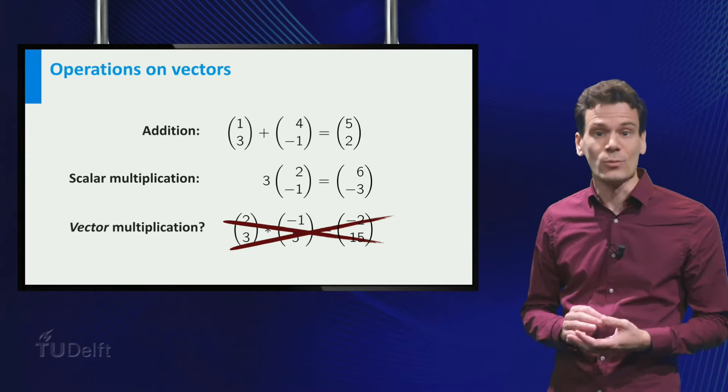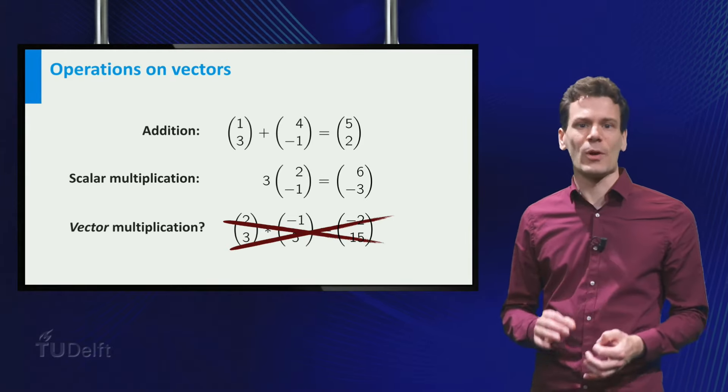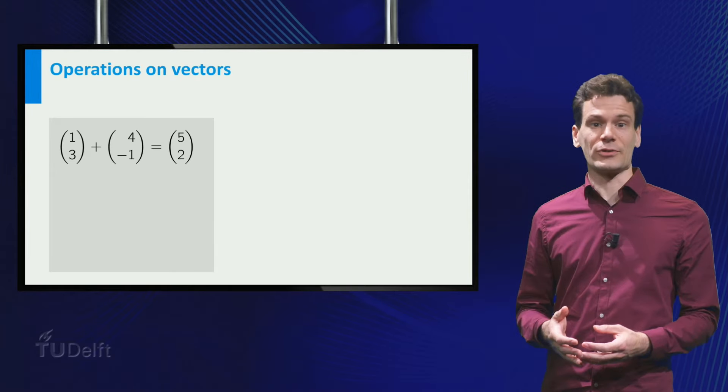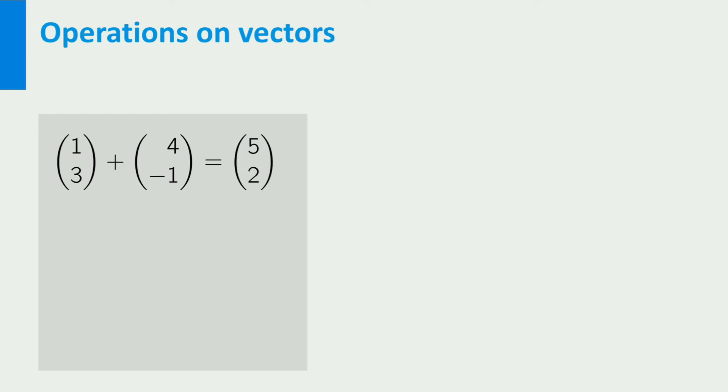To understand why, let's go back to the first two operations. Consider the sum of two vectors. If you draw vectors as arrows, then the sum can be obtained geometrically by simply putting one after another. Note that we do not need the coordinate system; it is a purely geometric construction.